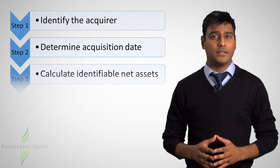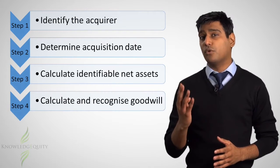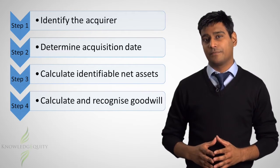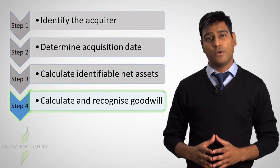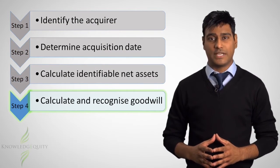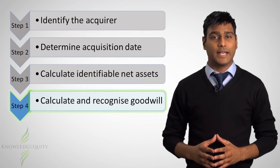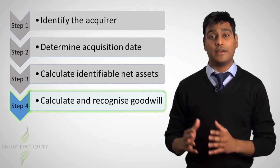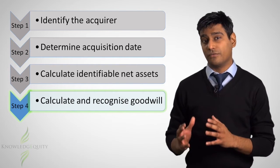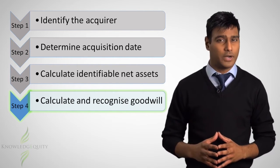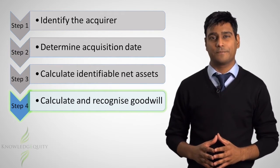All business combinations are required to be accounted for using the acquisition method. The acquisition method consists of four steps. Here we focus on the fourth step, which is the calculation and recognition of goodwill or bargain purchase.